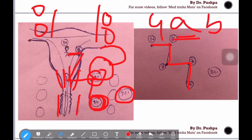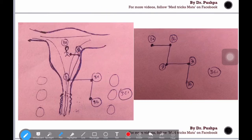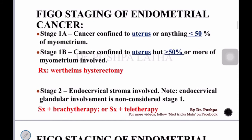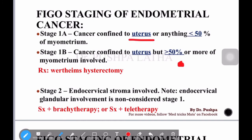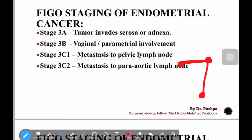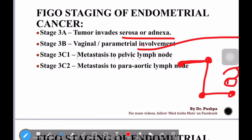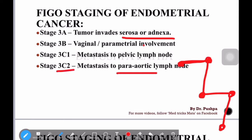Stage 4 has substages A and B. Stage 4a involves nearby organs — bladder and bowel. Stage 4b involves more distant spread including abdomen and intestines. Now let's do a quick final review: Stage 1a — less than 50% myometrium. Stage 1b — more than 50% myometrium. Stage 2 — endocervical stroma. Stage 3a — serosa or adnexa (ovary). Stage 3b — vaginal and parametrial. Stage 3c1 — pelvic lymph nodes. Stage 3c2 — para-aortic lymph nodes.